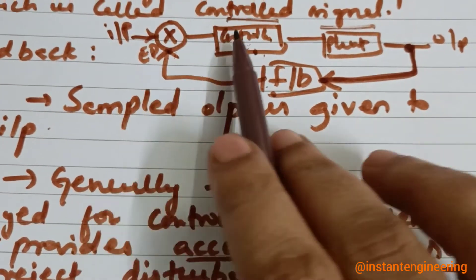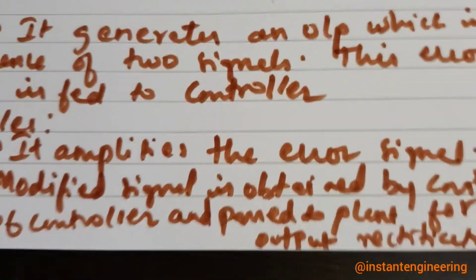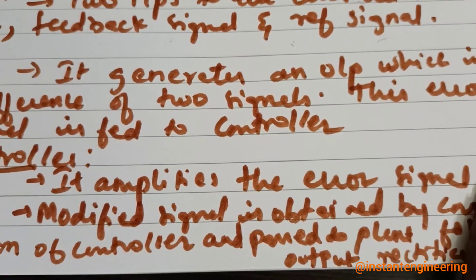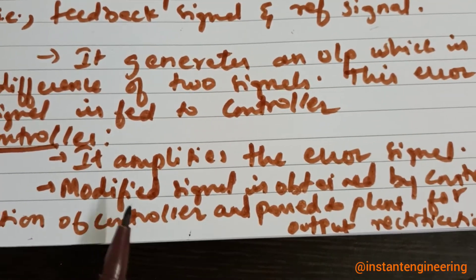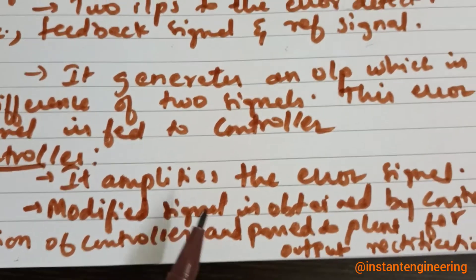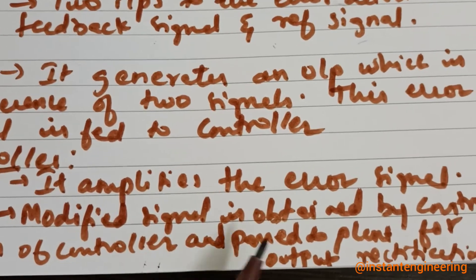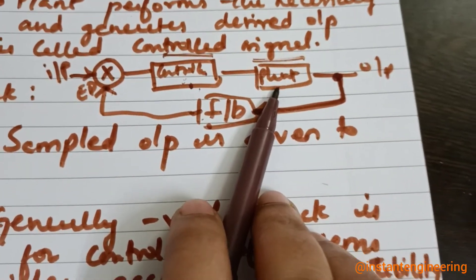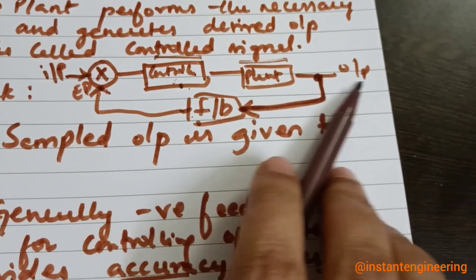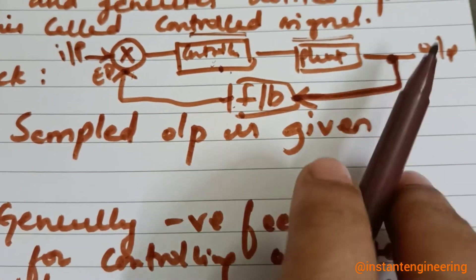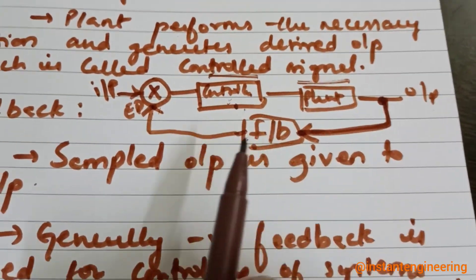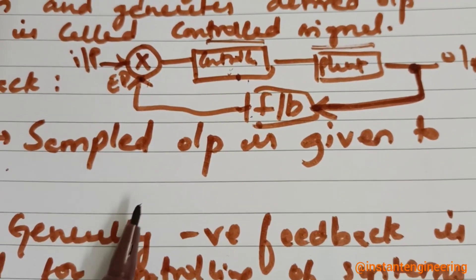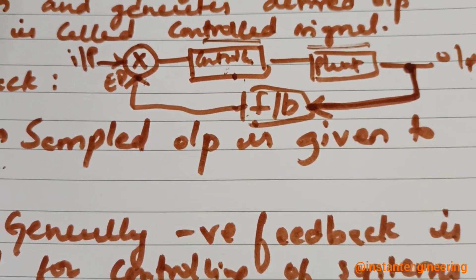The controller amplifies the error signal. The amplified, modified signal is obtained by the control action of the controller and is then passed to the plant for output rectification. Once this cycle is complete, you will hit the correct output signal value. This is how the basic concept of a control system works, based on this block diagram.